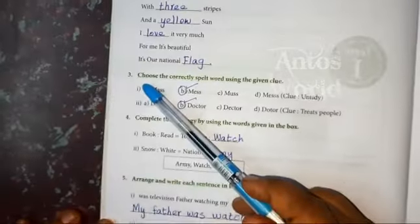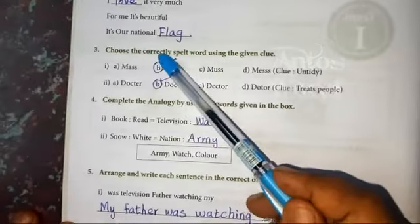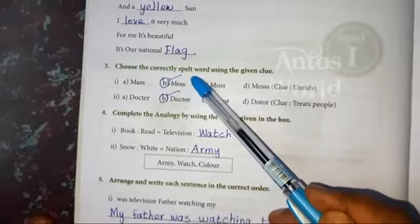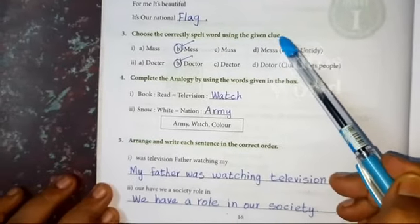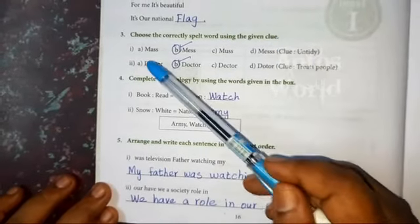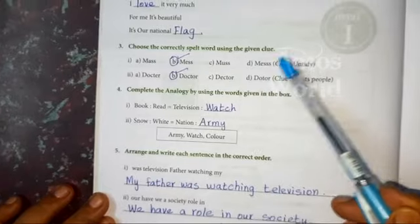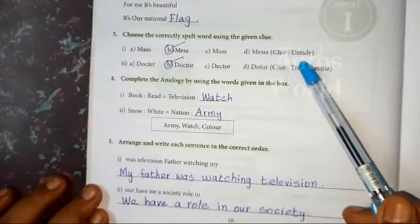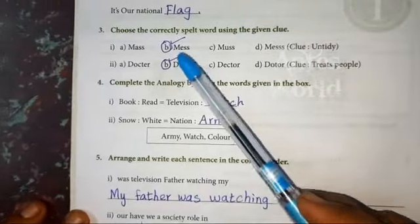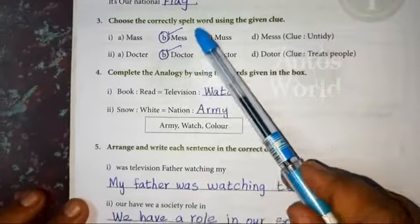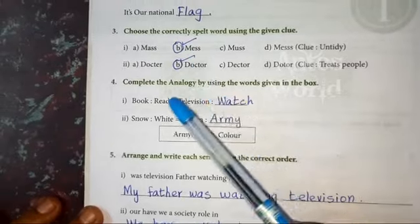Second question: choose the words given in the box and fill in the blanks to form a poem. Love, three, yellow, flag with three stripes and a yellow sun. Third one: choose the correctly spelled word using the given clue. The answer is 'mews' — M-E-W-S.